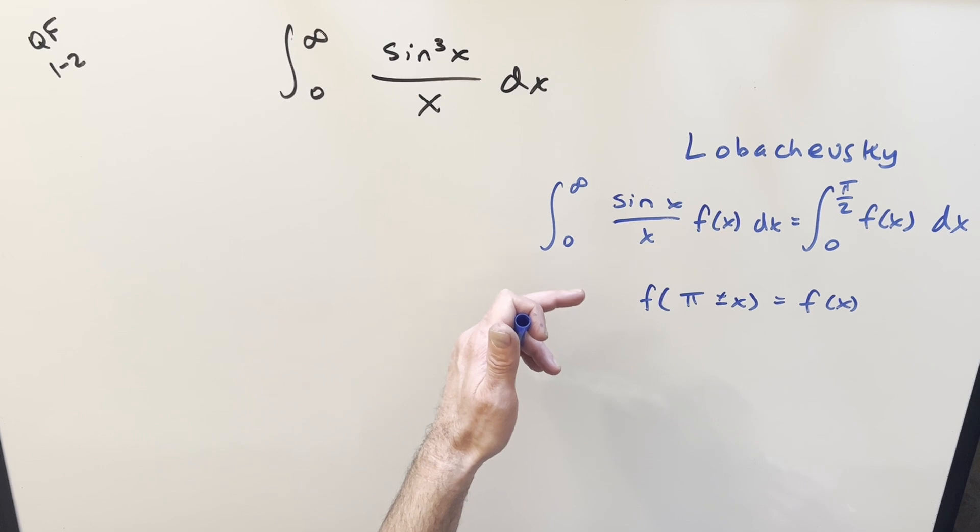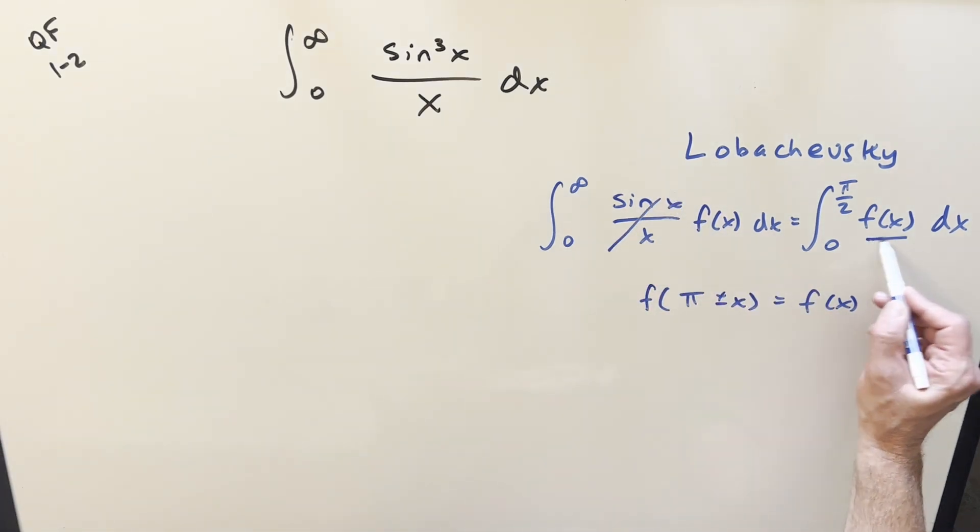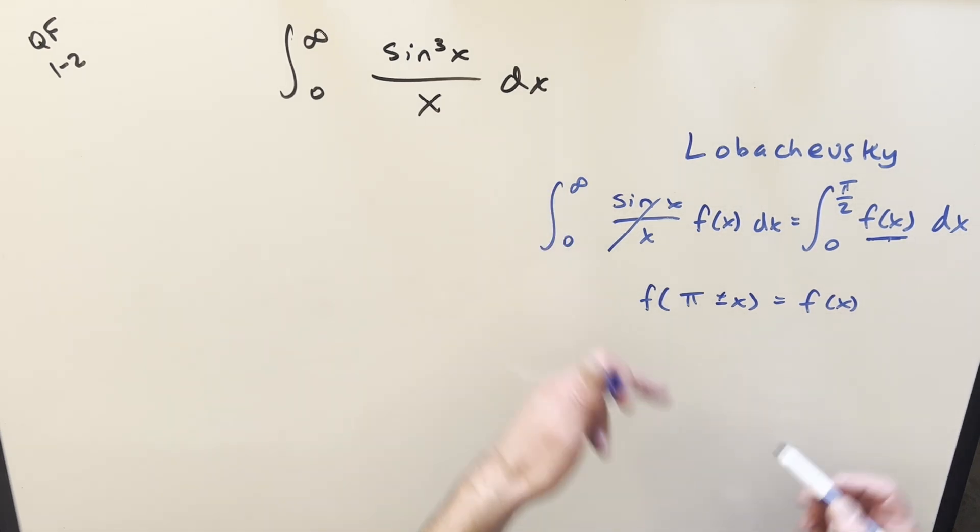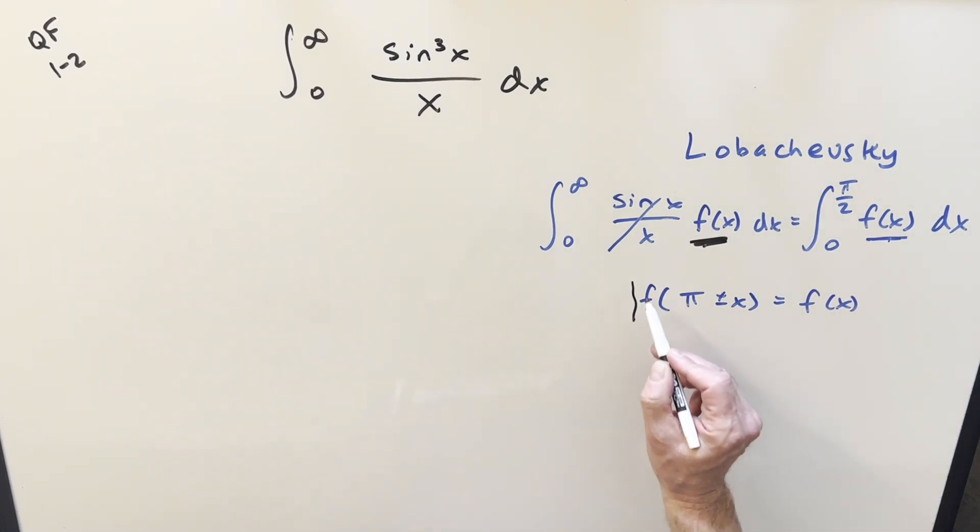And the great thing about this formula is that we get so much simplification with it because this part goes away completely, and we're just left with f of x, and also our bounds are simplified. We go from zero to infinity to zero to pi over two. So as long as our f of x is something nice, we should get an easy integral after we do this, but we do have this condition we need to consider.